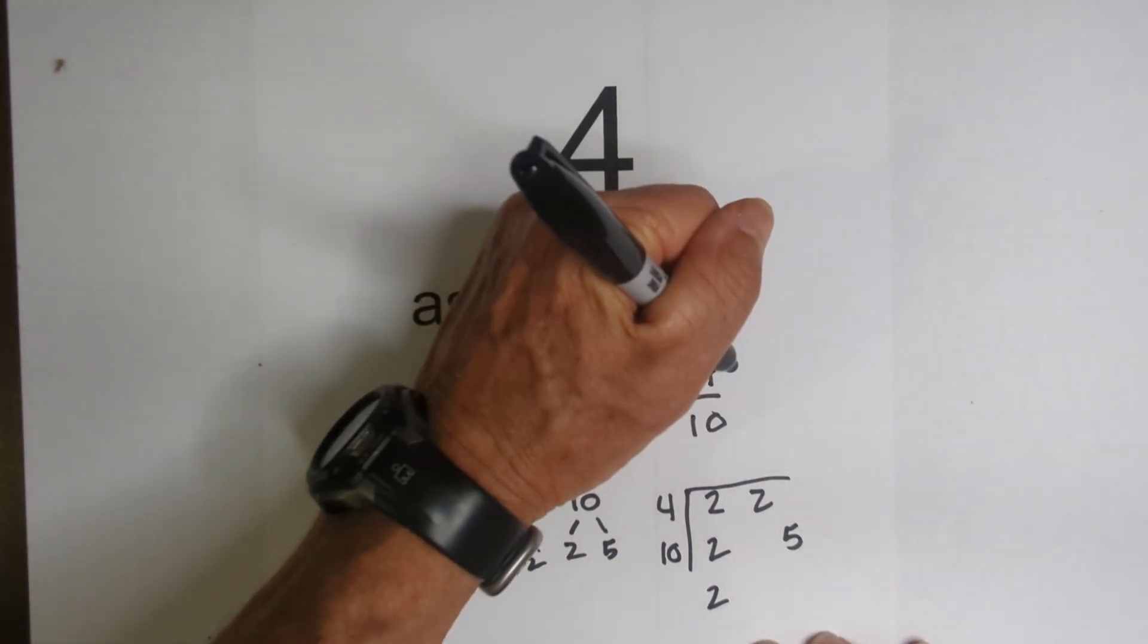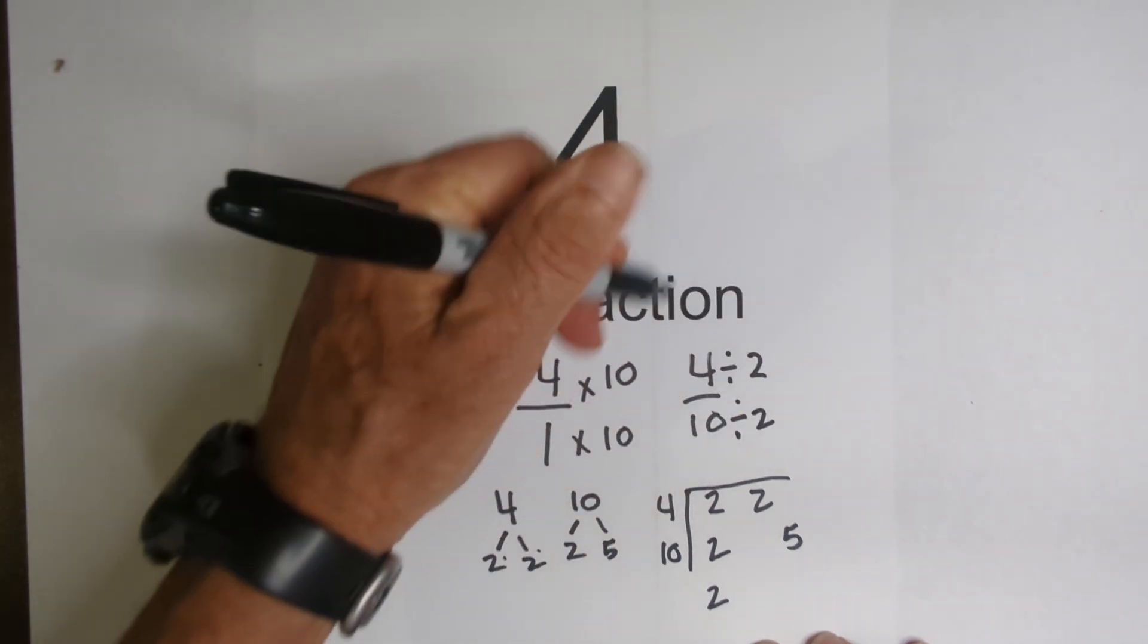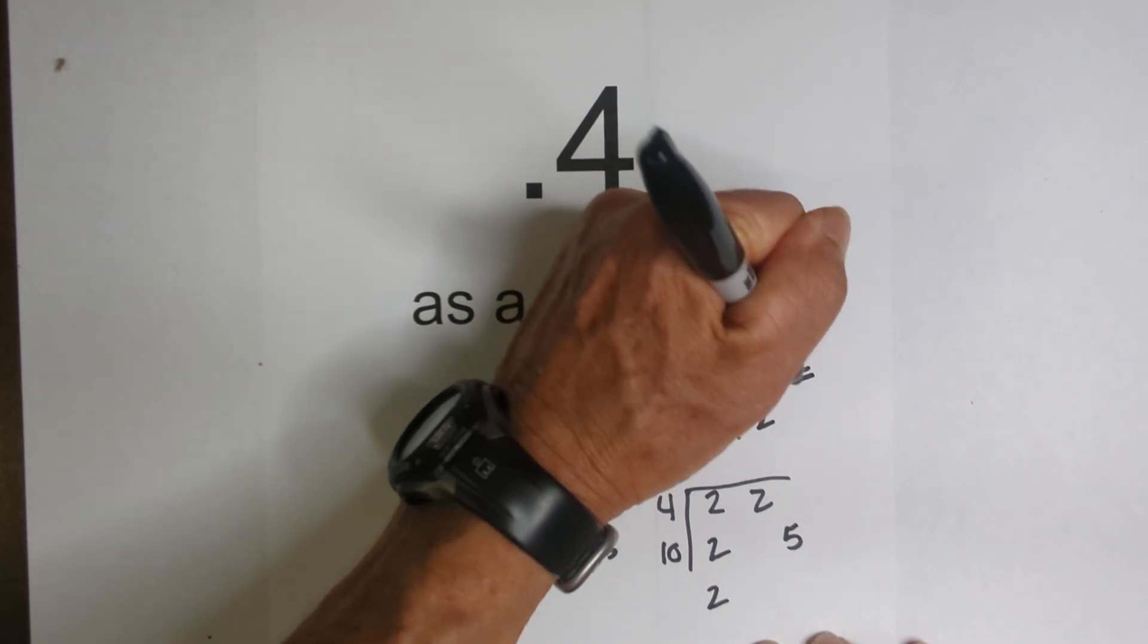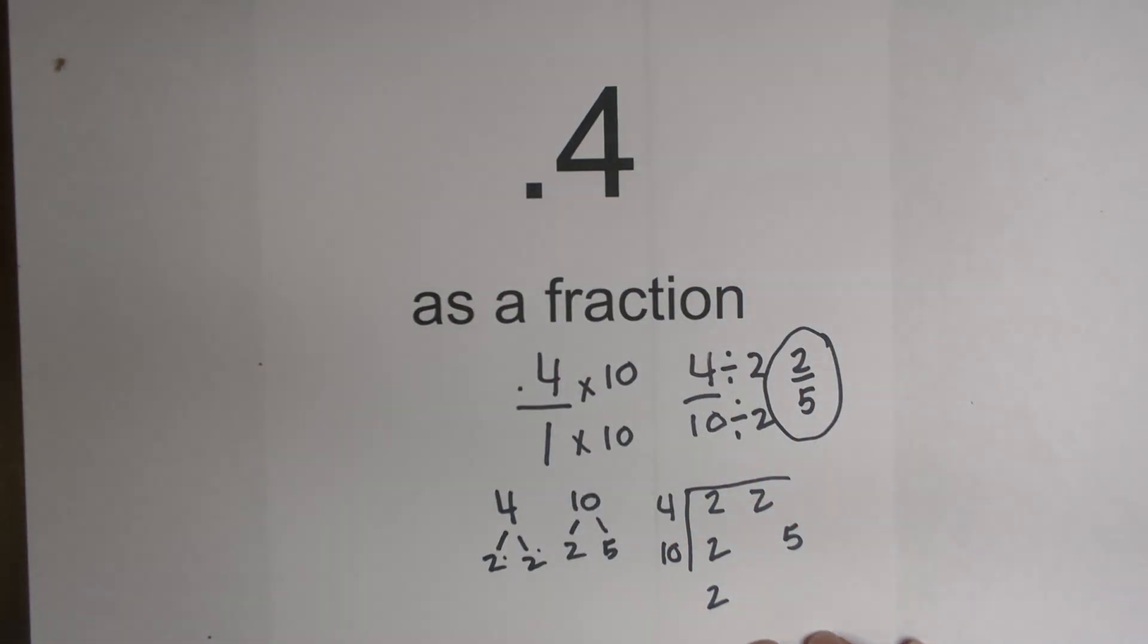Now we just divide 4 by 2 and 10 by 2, and that gives you 2 fifths. And we can't simplify any further because we're down to primes.